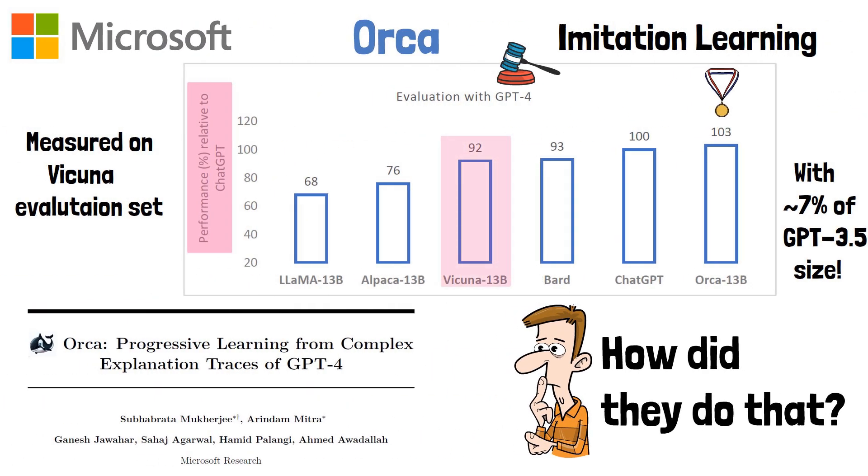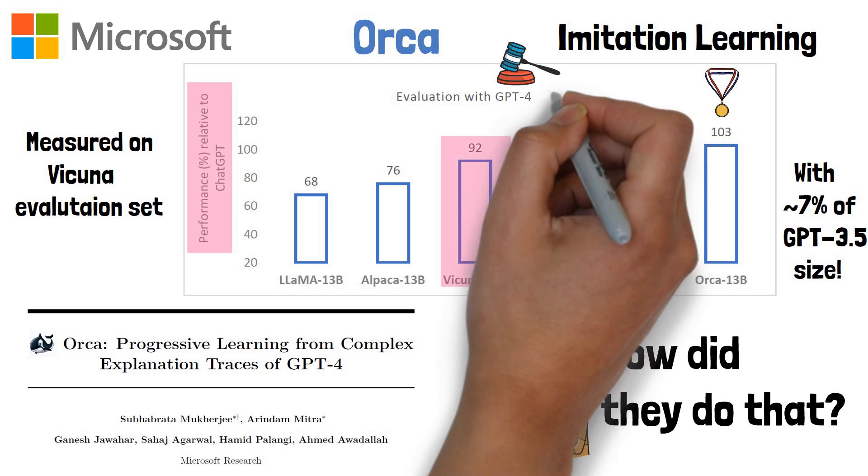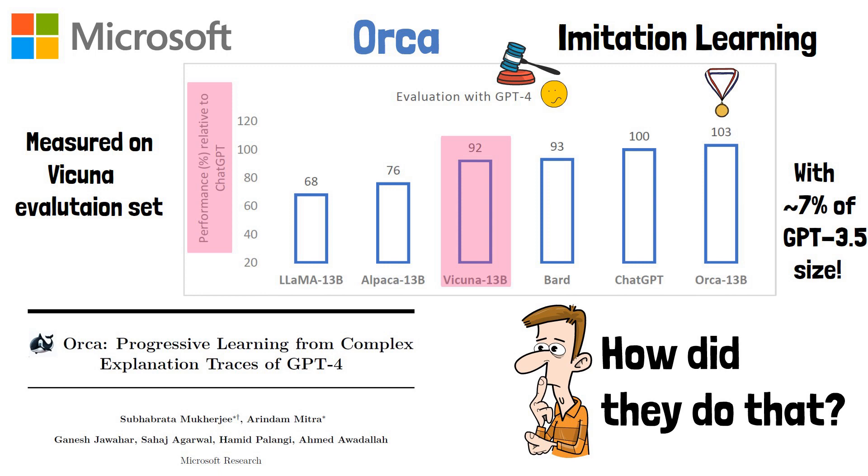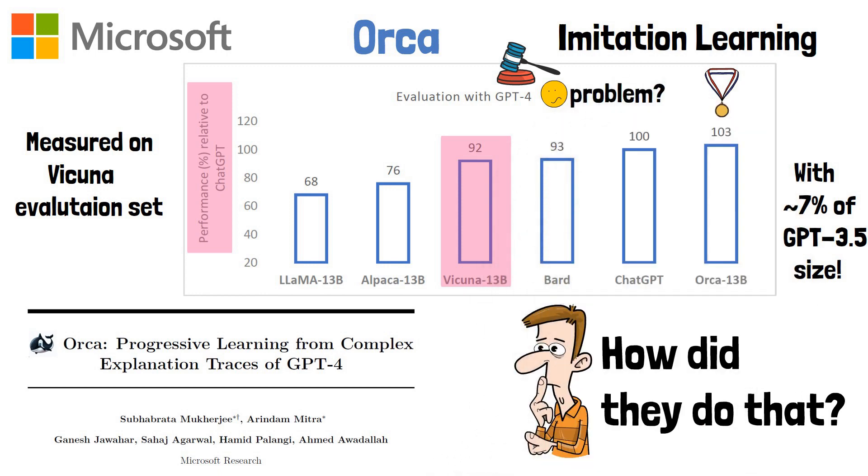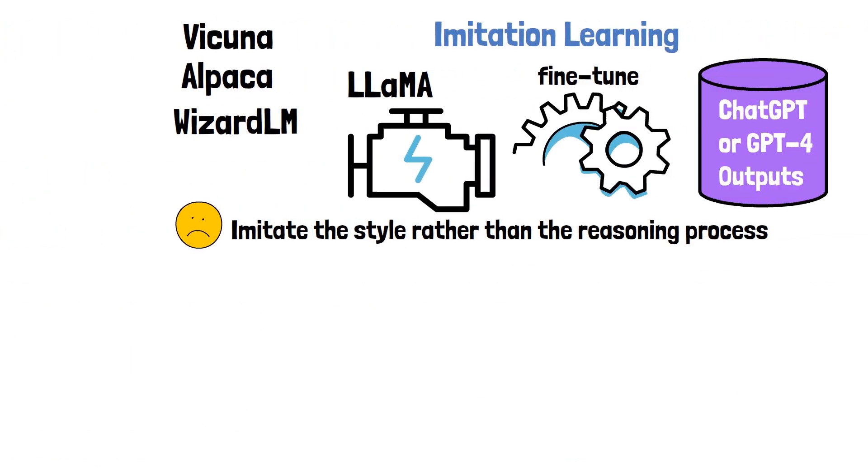So in the chart before we saw that Vicuña reached 92% of ChatGPT quality when GPT-4 is the judge. But this is problematic because GPT-4 may prefer responses for models that were fine-tuned on GPT responses.